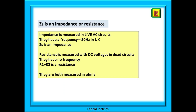First let's clear up one little thing. ZS is an impedance because it is measured on a live circuit — alternating current — it has frequency. Resistance is measured on DC circuits with no frequency. R1 plus R2, for example, is a resistance, a DC measurement on a dead circuit. But they are both measured in ohms, and at 50 cycles per second (50 Hertz) the difference between impedance and resistance is so very small that it is not worth worrying about. So for me, if you call ZS a resistance or you call it an impedance, I would still know what you were talking about.